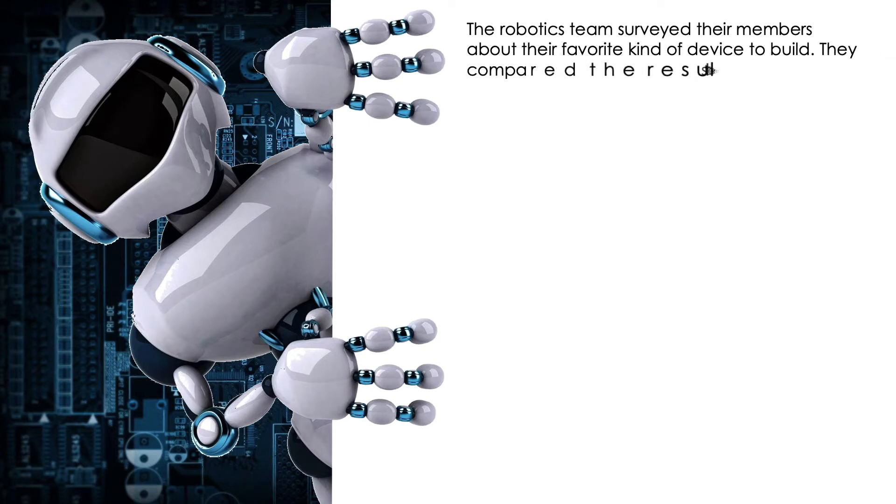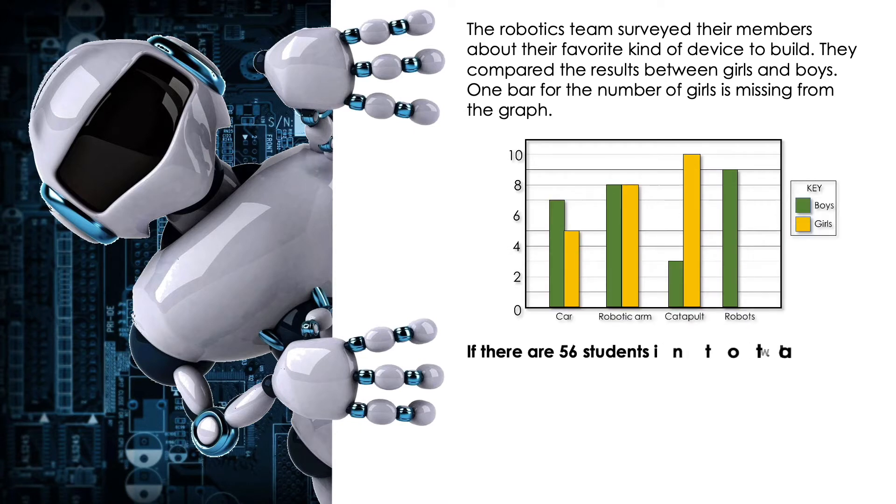The robotics team surveyed their members about their favorite kind of device to build. They compared the results between girls and boys. One bar for the number of girls is missing from the graph. If there are 56 students in total, what are the devices the girls like the least to build?